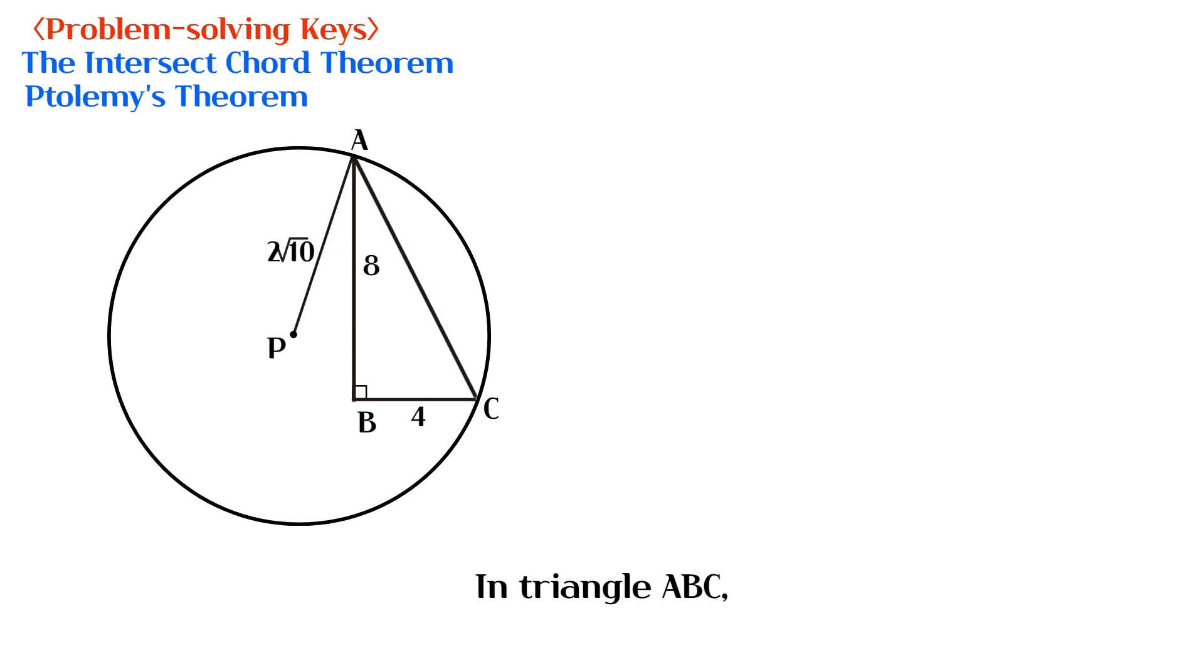In triangle ABC, the length of AC is 4 square root of 5. If we connect P and C, angle APC is going to be 90 degrees.